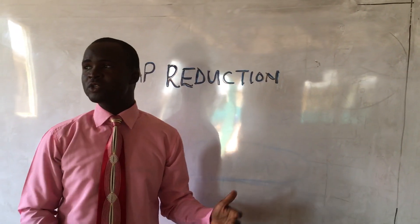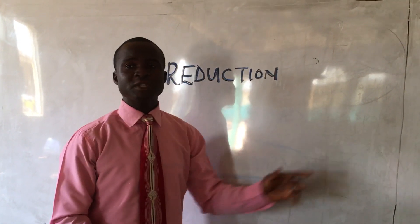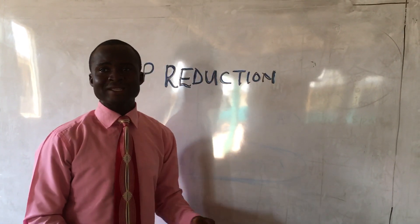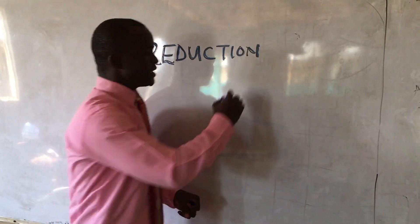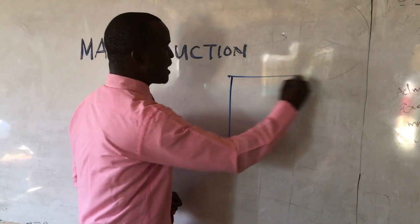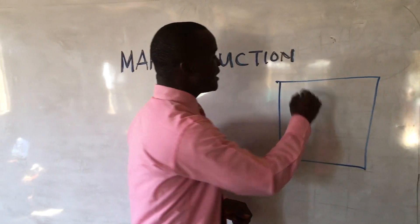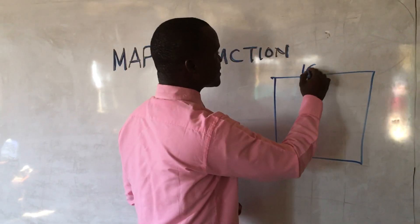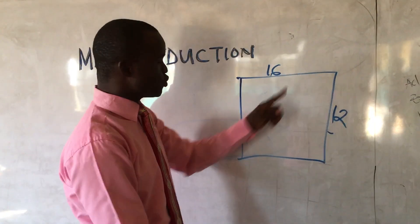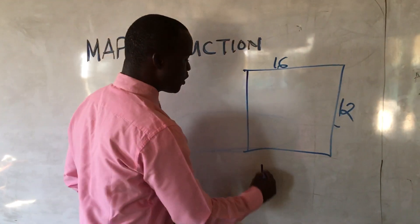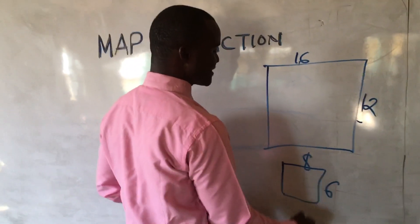Today we want to continue with the procedures for drawing map reduction. If you have to reduce the map twice its size, you are going to draw that map. If this is the map you are given and you are asked to reduce the map twice, if this is 16 and this is 12, you are going to reduce this one by 2. Your new outline, your booklet will be 8 by 6.